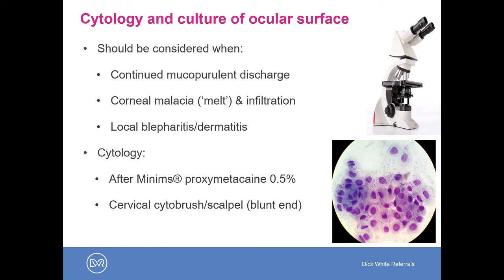Cytological samples should be performed after application of proxymetacaine — apply the drop, wait one minute, then take your sample. To get the most diagnostic sample it's best to use a cytobrush, but if unavailable, the blunt end of a scalpel can be used before spreading the material onto a slide, then either sending off for examination or staining in-house with a Diff-Quik type stain and examining under the microscope.